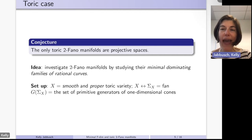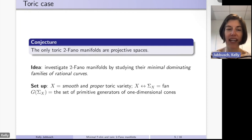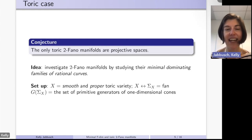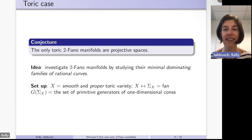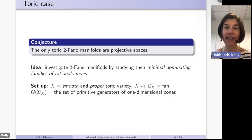Our approach to this conjecture is to investigate 2-Fano manifolds by studying their minimal dominating family of rational curves. This idea has been exploited in the non-toric case by Carolina and Ana-Maria. In the toric case we can interpret these minimal dominating families of curves in terms of primitive collections and primitive relations.